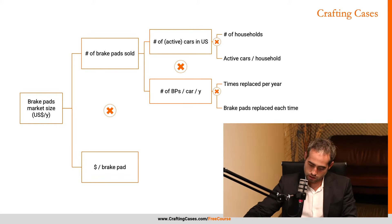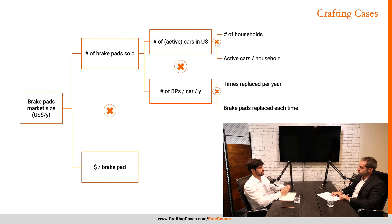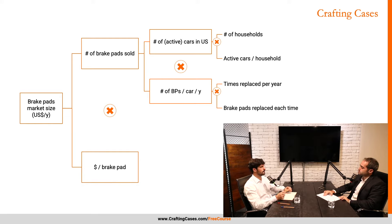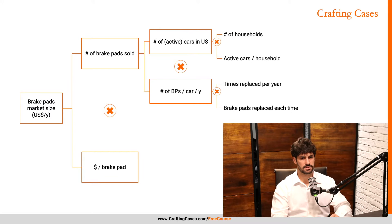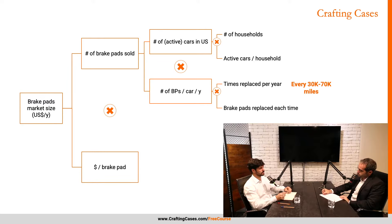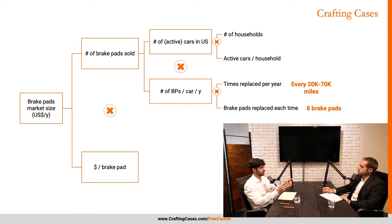I think I need to do some assumptions. There are a couple of numbers I want to ask if you have, because they're more industry-specific and I'm not sure I can make great assumptions for those. The first one is: how often do people replace brake pads? You need to replace your brake pads every 30,000 to 70,000 miles driven. And do you replace all of them at once? Yes. Okay, so it's eight brake pads per car — each wheel requires two, so eight pads replaced.